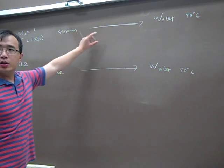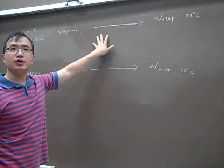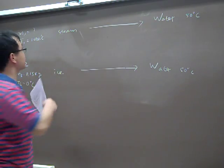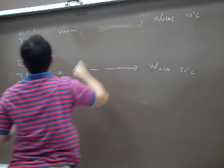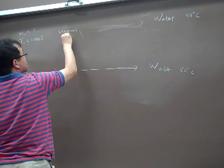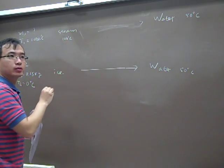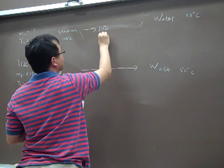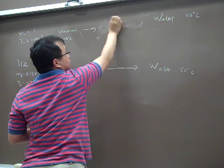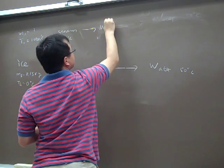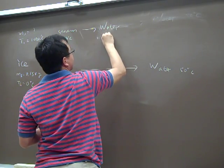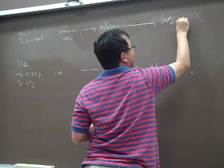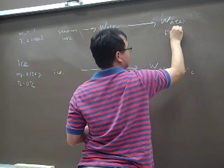But the process is not just a single process here, because first what happens is that 100 degree steam will have phase transition, becomes 100 degree water, and then becomes water at 50 degrees.